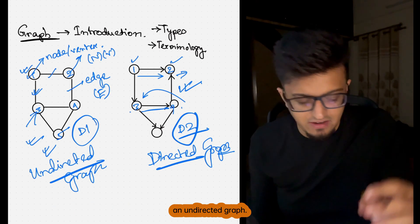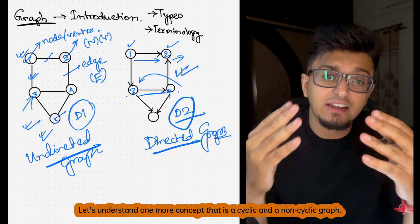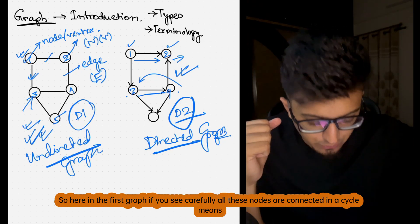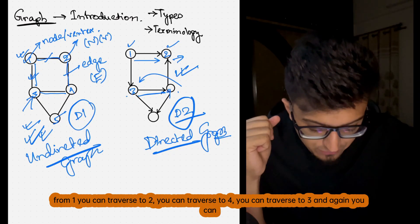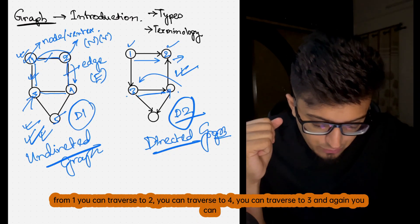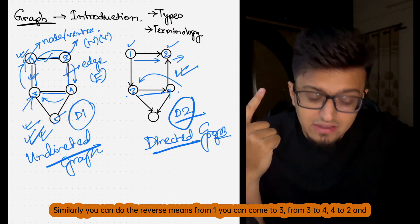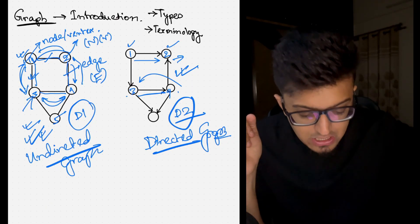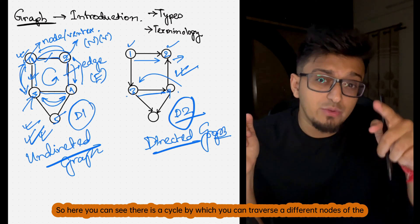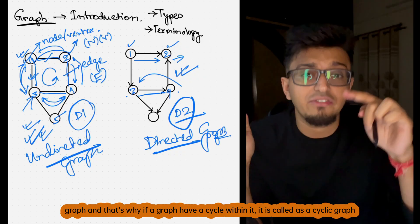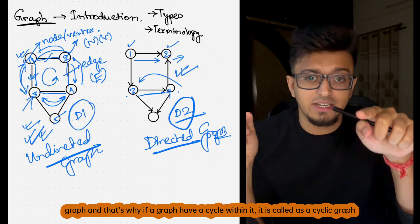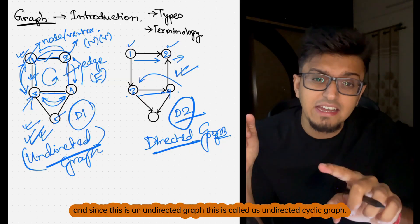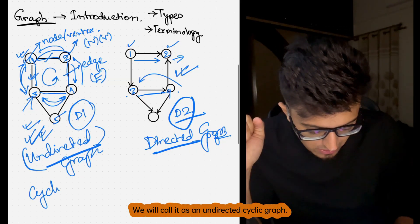Now let's go a bit deeper and understand the concept of a cyclic and a non-cyclic graph. In the first graph, if you see carefully, all the nodes are connected in a cycle — from one you can traverse to two, to four, to three, and back to one. Since there is a cycle within this graph, it is called a cyclic graph. And since this is an undirected graph, it is called an undirected cyclic graph.